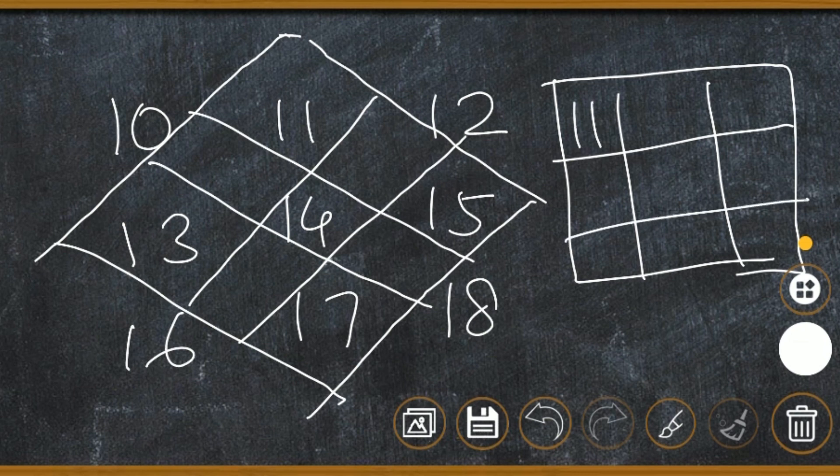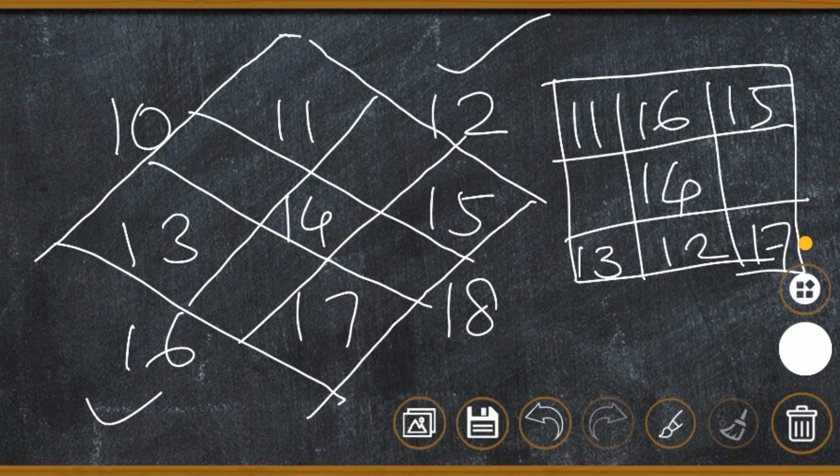Then the first line we can write 11, 15, the center 14, in this side 13, and the last number 17. Next we can write the numbers out of the box: 12 just opposite side, and 16 just opposite above. Then 18 is in the right side so we can write in the left side, and 10 is in the left side we can write in the right side.